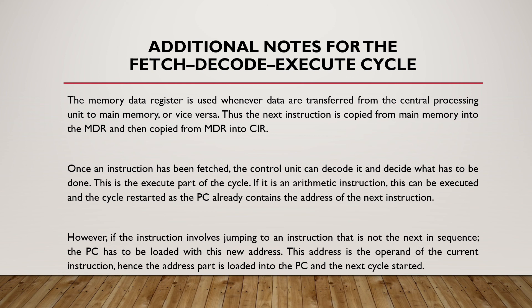Additional notes on the Fetch-Decode-Execute cycle: the Memory Data Register is used whenever data is transferred from the CPU to main memory or vice versa. The next instruction is copied from memory into the MDR and then copied from the MDR into the CIR. Once an instruction has been fetched, the Control Unit decodes it and decides what has to be done. If it is an arithmetic instruction, the cycle restarts as the PC already contains the address of the next instruction. However, if the instruction involves jumping, the PC is loaded with the new address — the operand of the current instruction — and the next cycle starts.